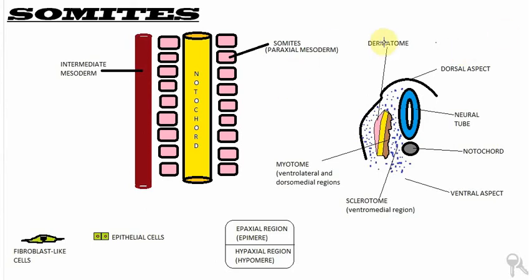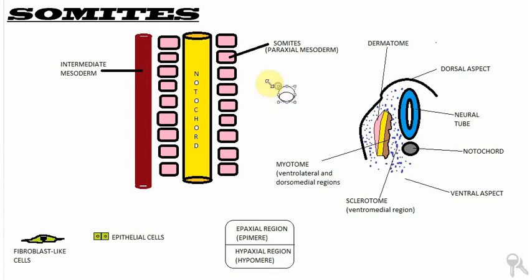Initially we do not have fully-formed somites. In this diagram you can see the notochord, and we can see the somites which are arranged in a cranial to caudal direction, and we can also see an intermediate mesoderm, but that's not important for us today. Initially we have regions known as somitomeres, and somitomeres actually consist of mesodermal cells which are arranged in a concentric arrangement. So this is the structure of the somitomeres.